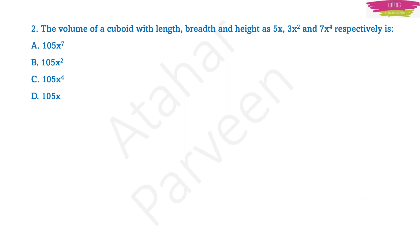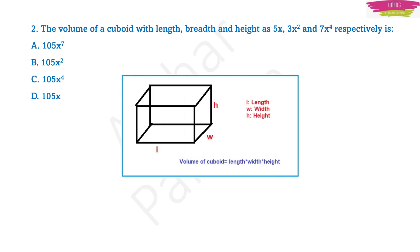Next question. The question is: the volume of a cuboid with length, breadth and height as 5x, 3x² and 7x⁴ respectively is what? This question you can put in the category of algebra or geometry because they are talking about volume of a cuboid. For this you should know the formula for volume of a cuboid, which is length × width × height, meaning you multiply all three given terms.